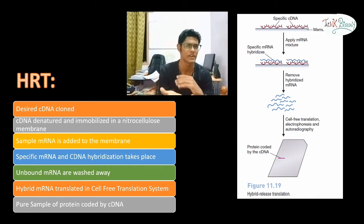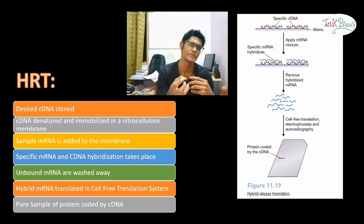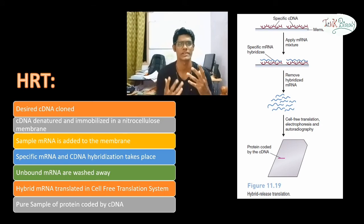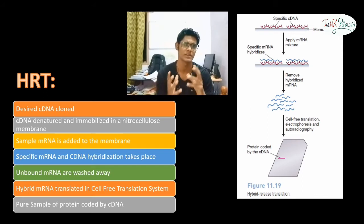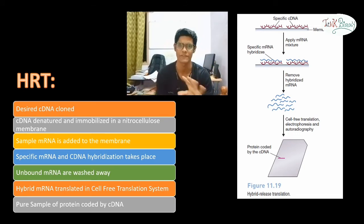The membrane is washed so that unbound mRNAs are removed. The hybridized mRNA-cDNA complex is then placed into a cell-free translation system so that the desired translation product is produced. The purified protein sample encoded by this cDNA is separated using gel electrophoresis and visualized by autoradiography. This is the HRT technique.